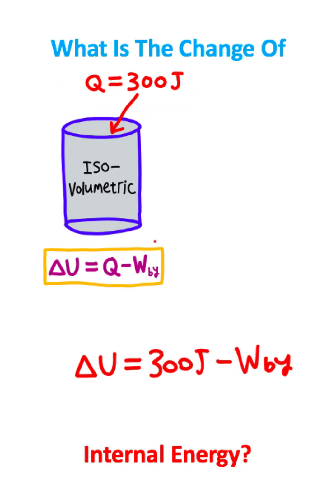But here's the problem. We don't know what the work done by the system is. We don't have this variable in the problem, right?